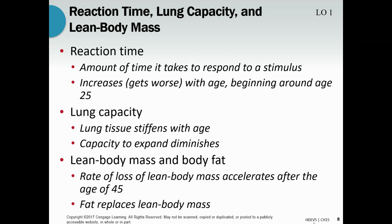Lung capacity, when you get into middle age, also starts to go down. This usually has to do with tissue stiffening, so you can't expand your lungs quite as much. The same thing is true with lean body mass — your muscle. Muscle continuously gets lower as you get older, and through your middle adulthood, every 10 years you're losing quite a significant amount of muscle.